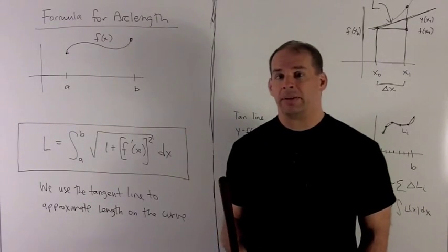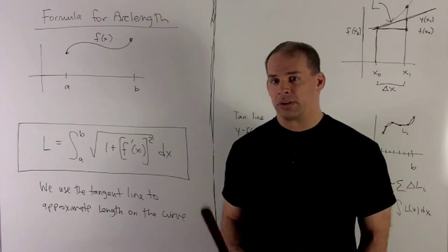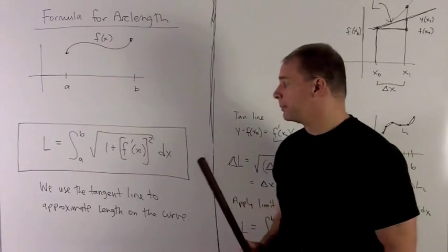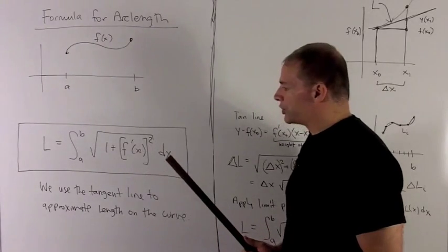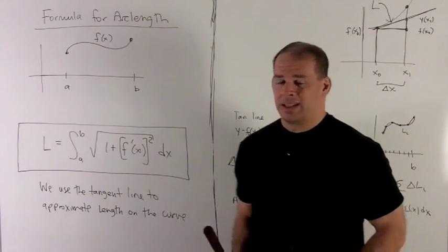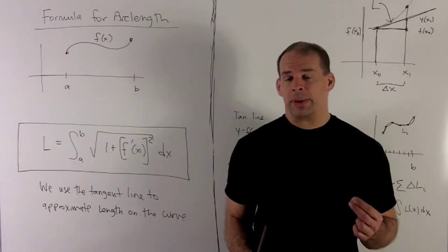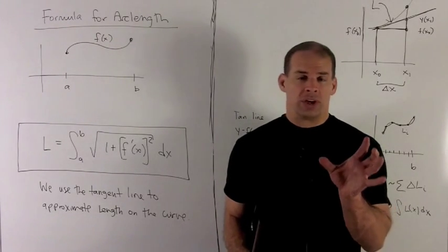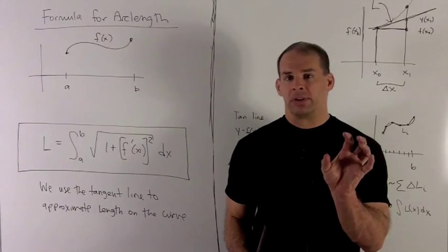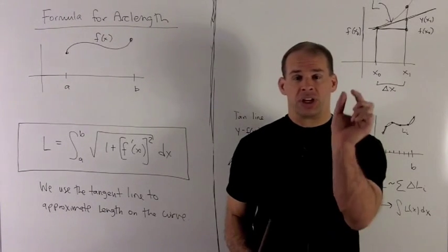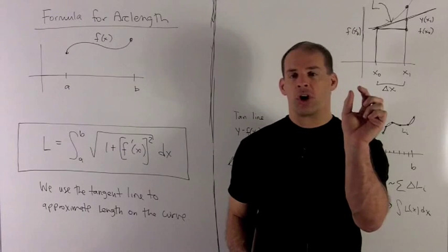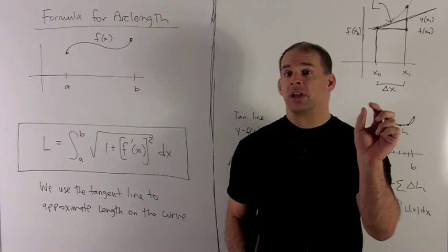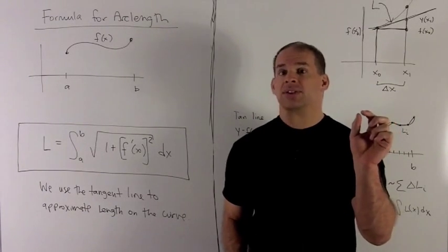We'll get to some examples in a little bit. First, let's do a quick derivation to make sure our formula is believable. My approach is going to be to use the tangent line to approximate the length of the curve. The idea is to use integration — we're going to chop up our interval into little bits, and above each interval there are little bits of curve which we'll approximate with straight lines coming from the tangent lines.